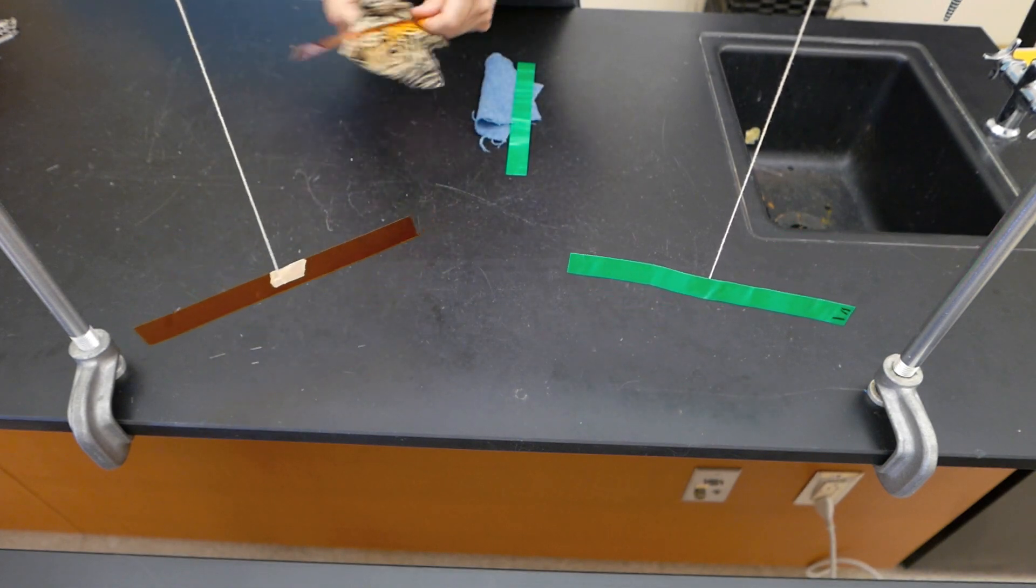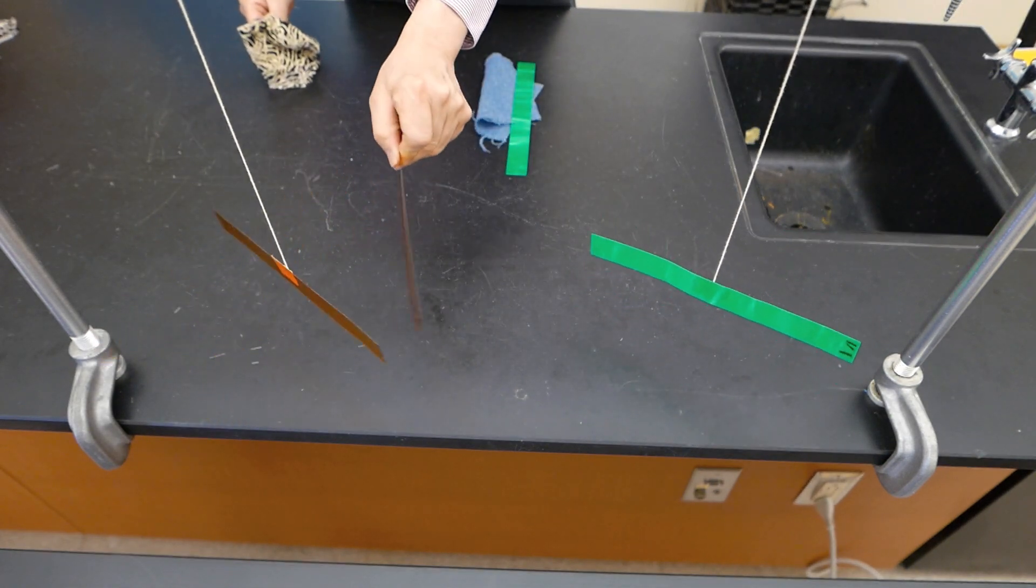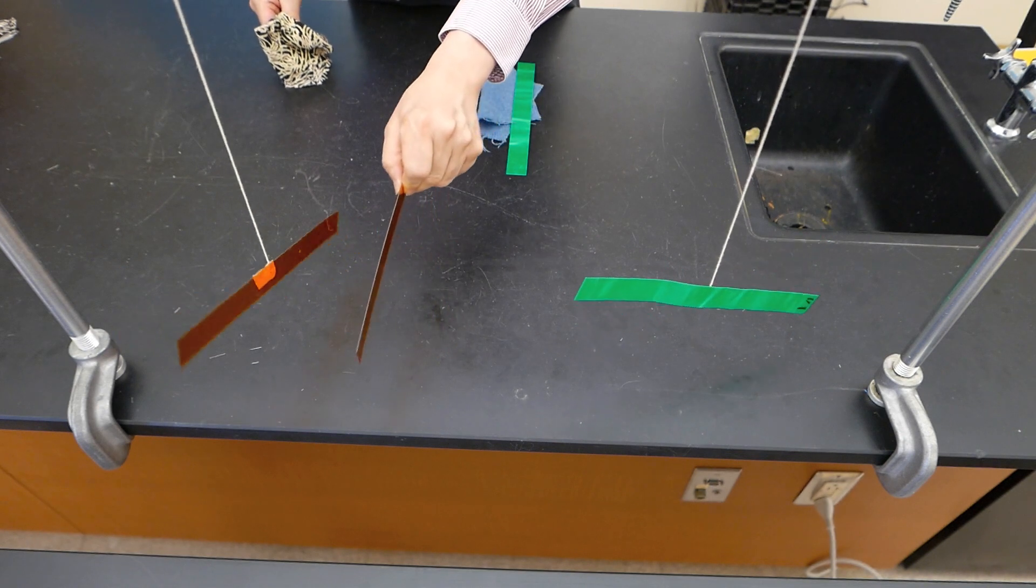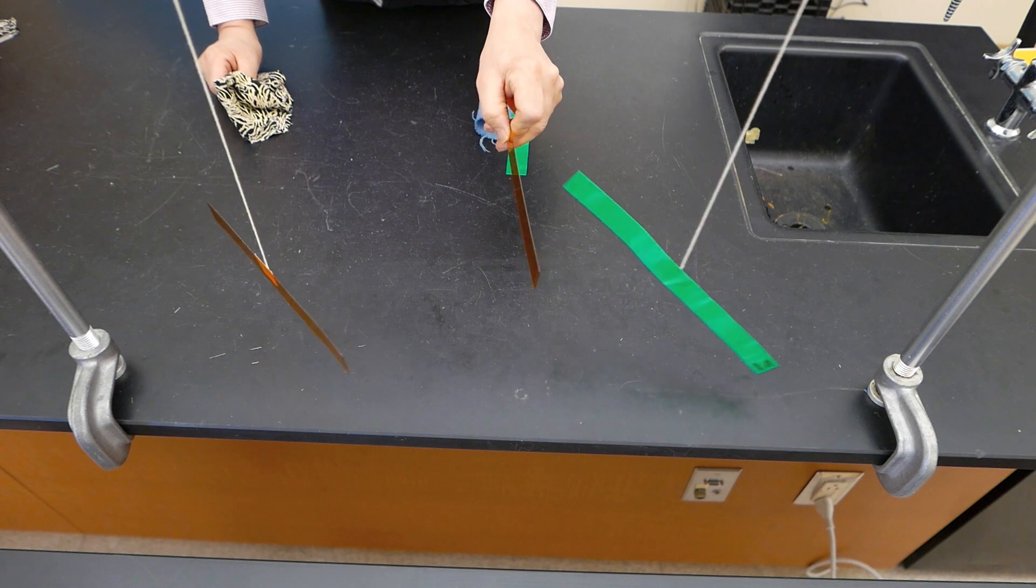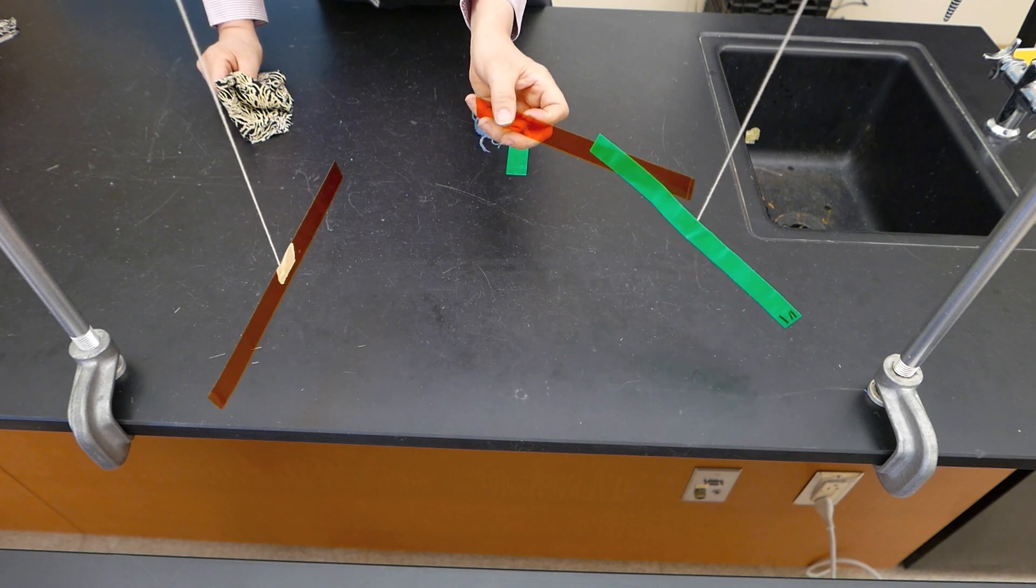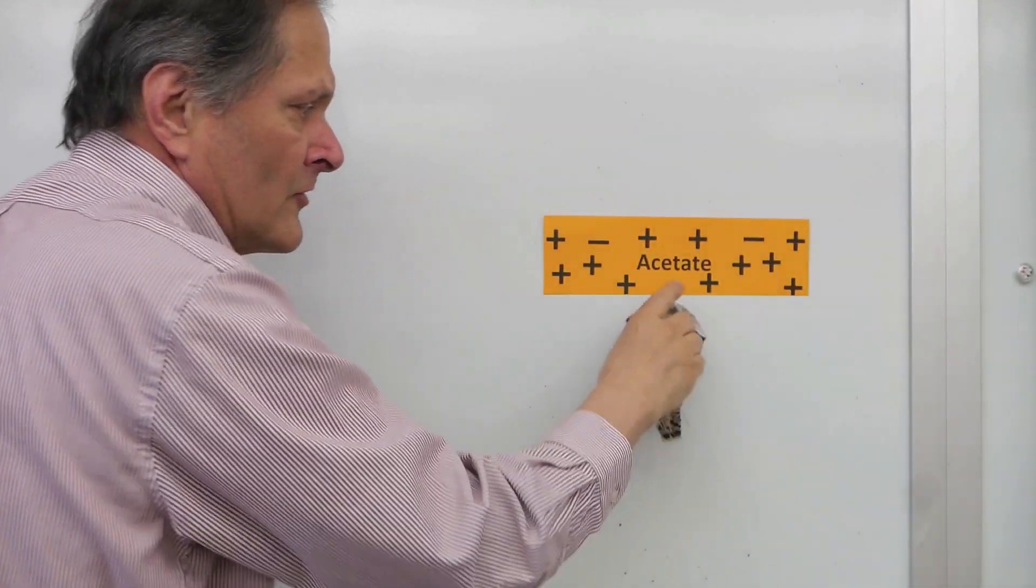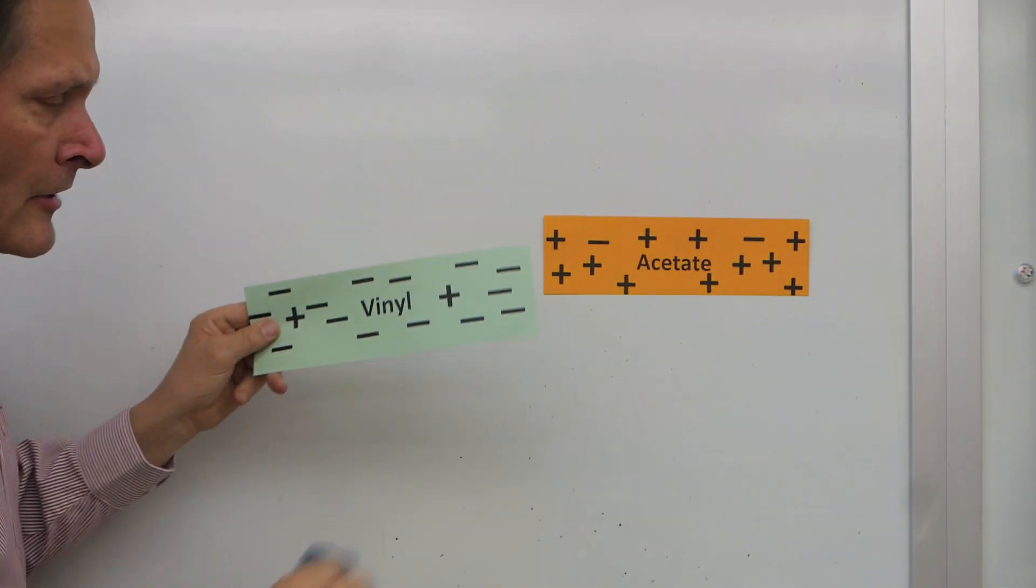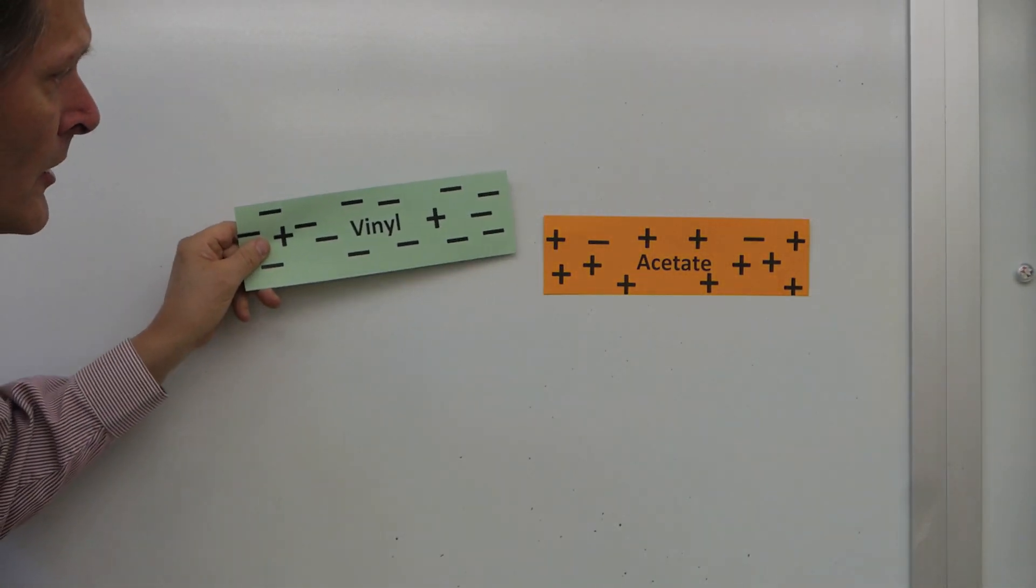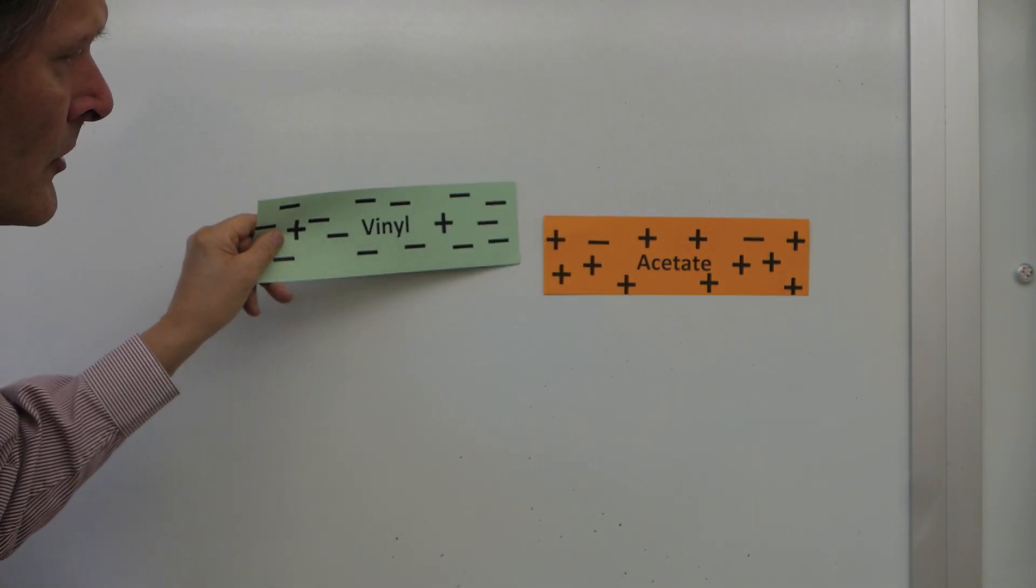Now let's try it with the two acetate strips. Once again they push away. But if I bring it near that vinyl strip, once again there's our attraction. I remove electrons and the acetate becomes positively charged. I rub the vinyl and add electrons so it becomes negatively charged. And the positive and negative charges attract.